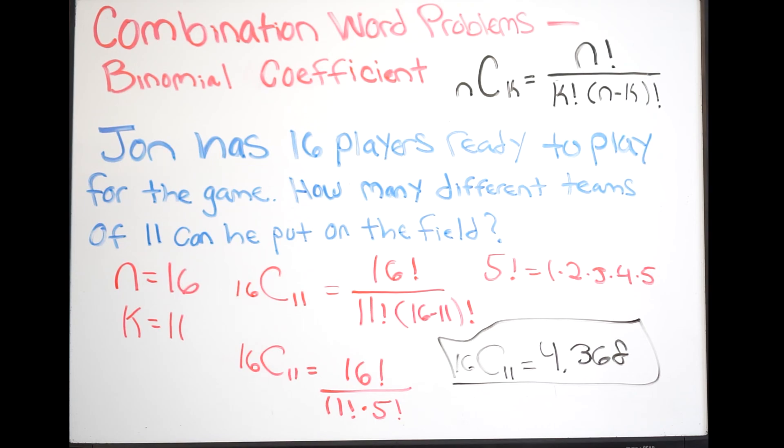So again what that tells us is there are 4,368 different ways in which John can put 11 players on the field out of the 16 players that he has. And that is it.